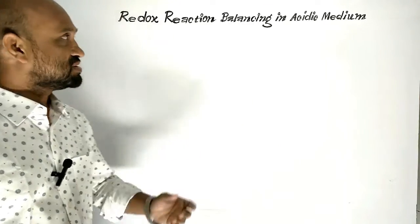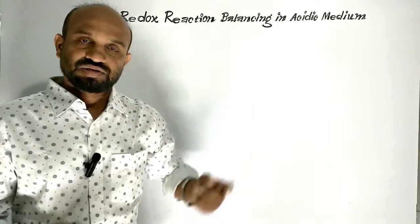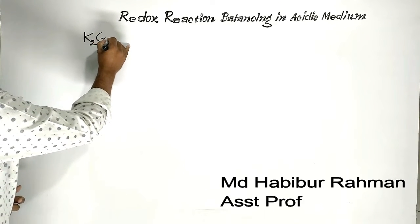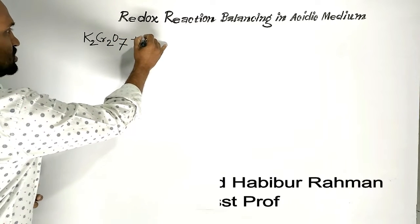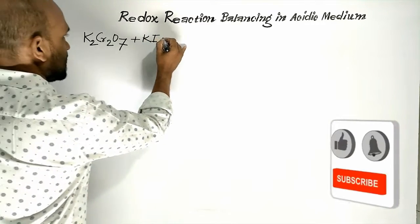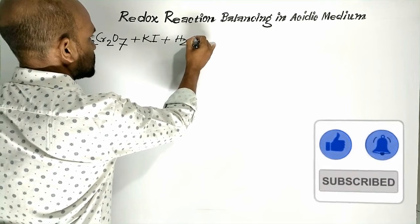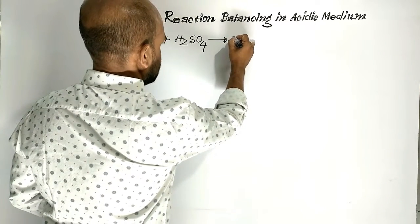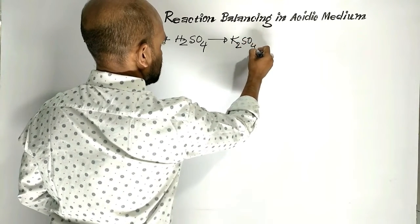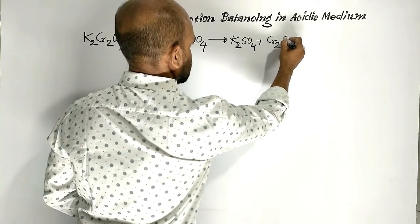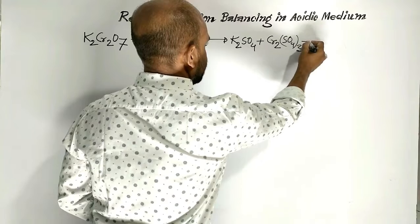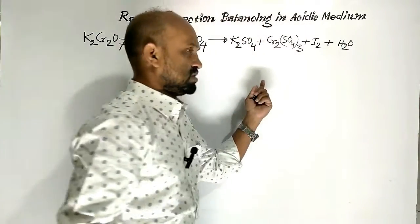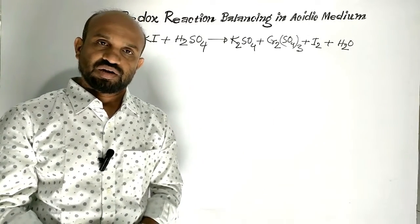Today I am going to discuss Redox Reaction Balancing in Acidic Medium. Let us see the reaction. Potassium dichromate and potassium iodide — the reaction is conducted in acidic medium, suppose here sulphuric acid. The products are potassium sulfate, chromic sulfate, iodine, and water. This is the reaction we have to balance by the ion-electron method.